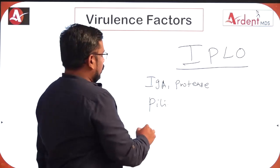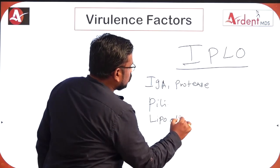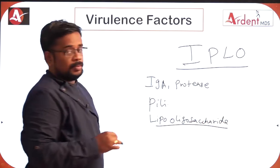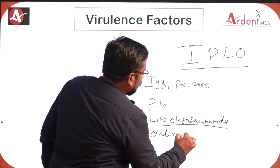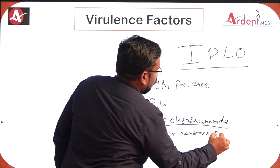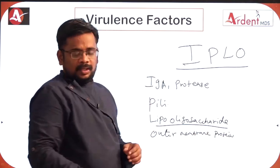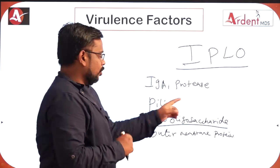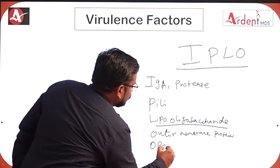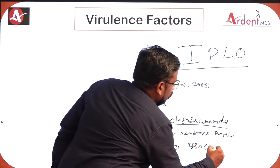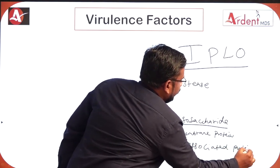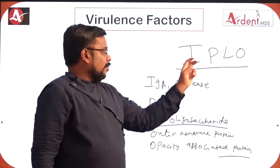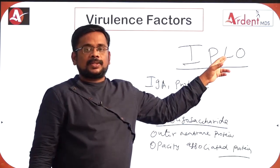L is for lipo-oligosaccharide, O is for outer membrane protein, and another O is for opacity-associated protein. So to summarize: IPLO — IgA1 protease, pili, lipo-oligosaccharide, opacity-associated protein or outer membrane protein.